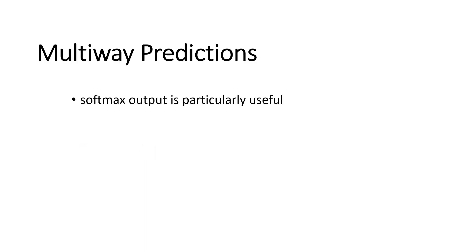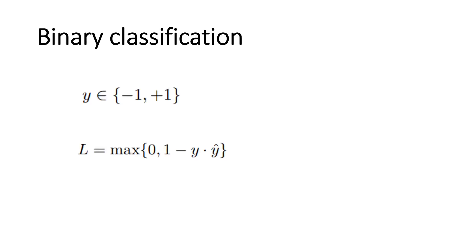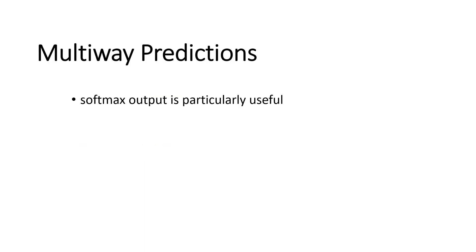Now we have the case of multi-way prediction, which is different from binary classification where we predict two options. In multi-way prediction, we have three, four, or more classes. Softmax output is very useful here because it's probabilistic, and it requires a different type of loss function. If you use other kinds of loss functions, softmax may not be appropriate. Some outputs can be deterministic rather than probabilistic. For probabilistic predictions, we have two types of loss functions depending on whether the prediction is binary or multi-way.